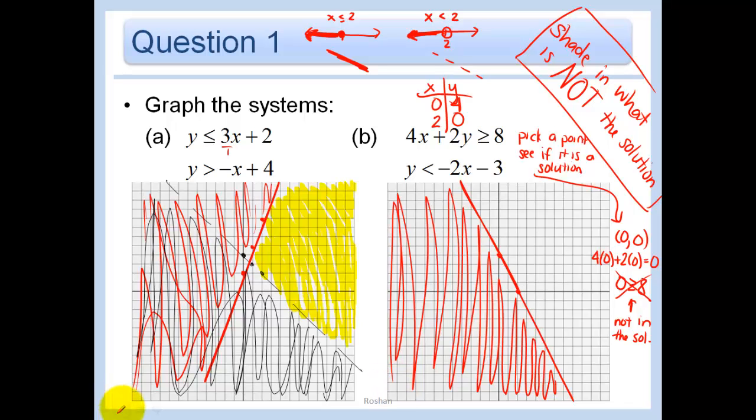Okay, next one we can do our old method of slope intercept form. So start at negative 3. 1, 2, 3. Right, and then go down 2 and over 1. Down 2 and over 1. Okay, and here we make a dotted line.